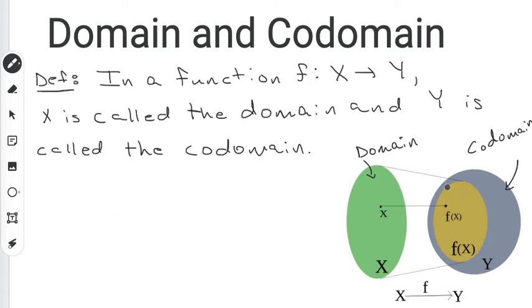And inside the codomain, we have what's known as the range. So this yellow oval is called the range. And every single x value is going to get mapped to an element within the range. But the range itself is a subset of the codomain.